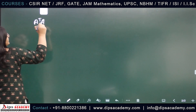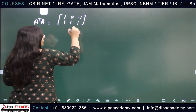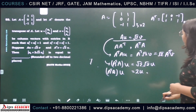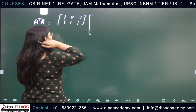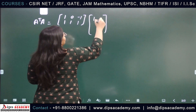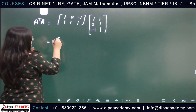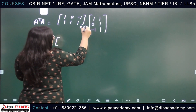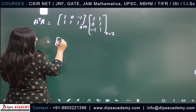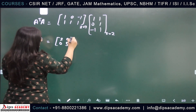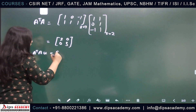Let us compute A^T·A. A^T = [[1, 0, -1], [1, 1, 1]] and A = [[1, 1], [0, 1], [-1, 1]]. A^T·A is a 2×2 matrix. The result is [[2, 0], [0, 3]]. And A^T·A·u = 2u, where u = [u1, u2]^T.